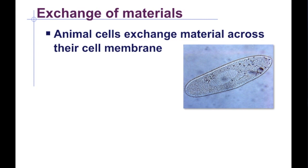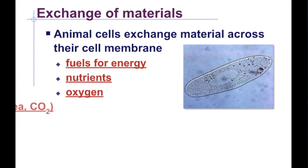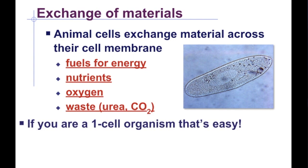Animal cells exchange materials across their cell membranes so that they can obtain fuel for energy, nutrients, oxygen, and release their waste products — that's urea and carbon dioxide. And if you are a small organism, a single-celled organism, that's going to be a relatively easy process because small molecules like oxygen and carbon dioxide can readily move between cells and their immediate surroundings by the process of diffusion.